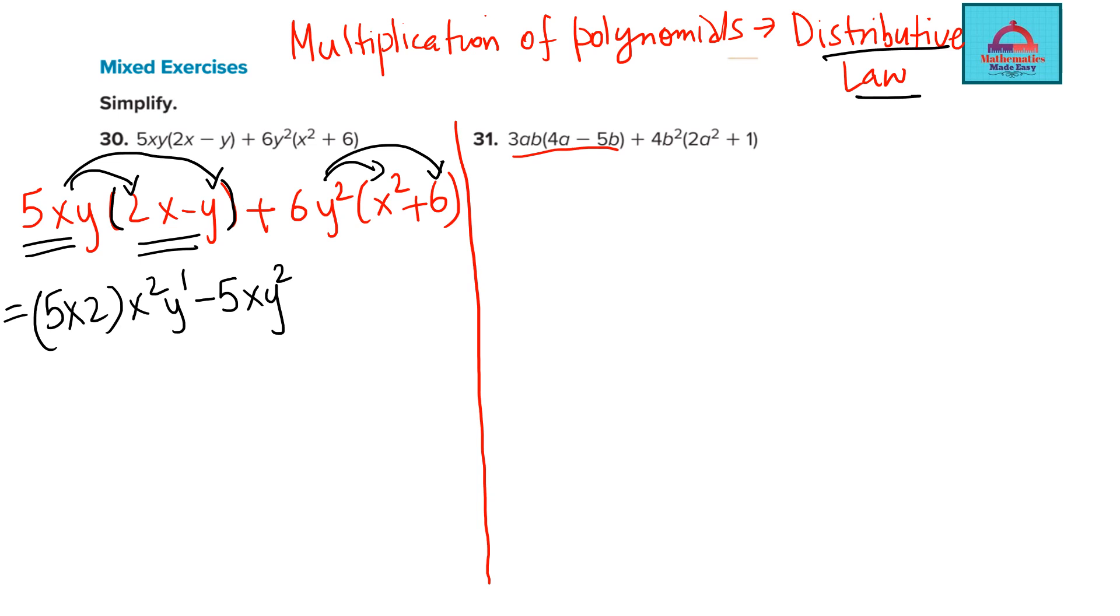Similarly, do the distributive law here. In between there is plus sign. I keep it as it is. So 6 multiplied with x² y². This is the first term added to 6 multiplied by 6. 36 y².